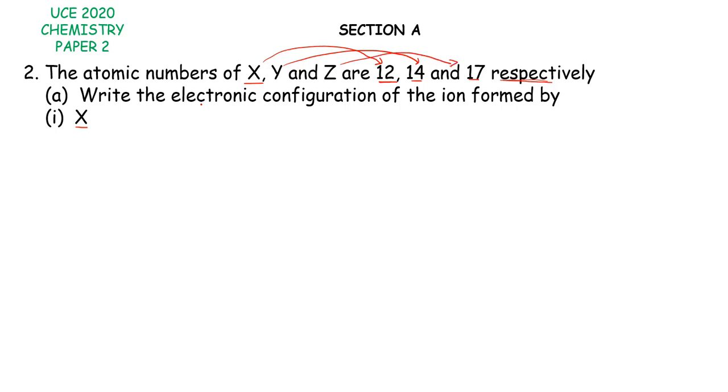However, we want to write the electronic configuration of the ion. One thing to note is that our X has atomic number of 12. That means it has 12 electrons because it has 12 protons. So electronic configuration of the atom of X is 2, 8, 2.